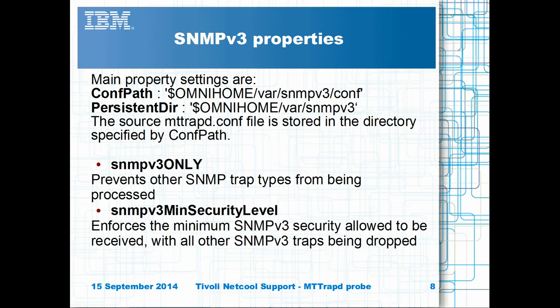SNMP v3 allows traps and informs to be sent securely. SNMP v3 traps require the engine ID to be defined in the trap and the probe's mttrapd.conf file. The probe creates a boot time mttrapd.conf file in the persistent directory after reading the data from the human-readable mttrapd.conf file in the conf path directory. The probe properties SNMP v3 only and SNMP v3 min security level can be used to prevent unwanted event processing.